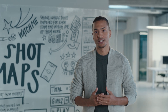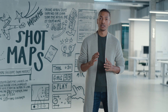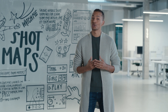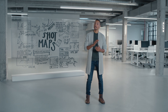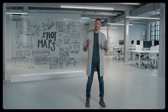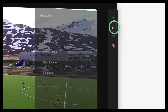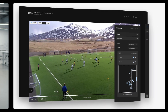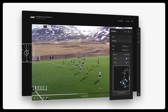Shot maps are another addition to the game data. Once the video is uploaded, you automatically get a visual representation of the shots you had during the game. The map shows where shots were taken from for each team and which of them hit the back of the net. The map is interactive, making it easier than ever to watch and analyze the goals, the shots, and the build-up play.